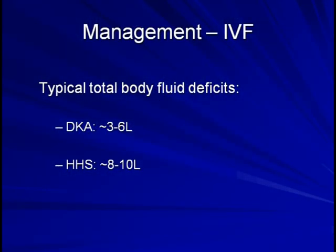As a very general guide, typical total body fluid deficits in DKA range from about 3 to 6 liters in most patients, while in HHS it is closer to 8 to 10 liters.